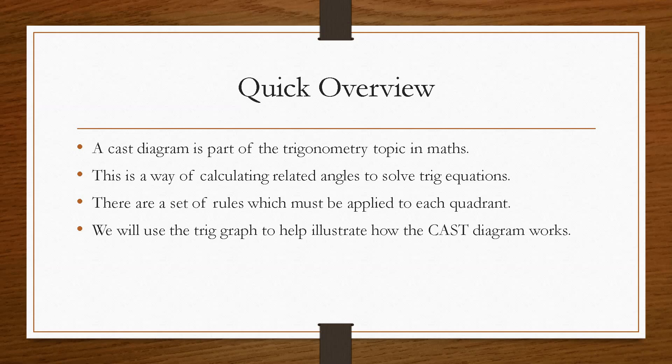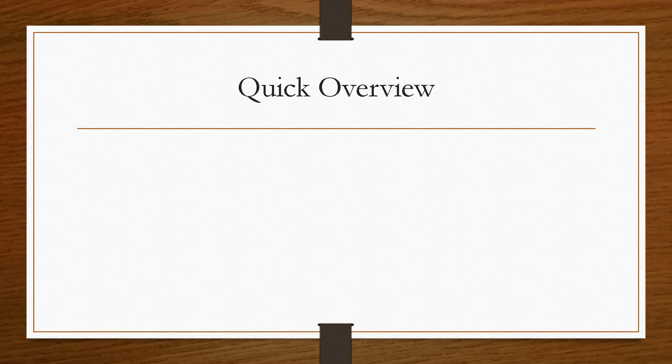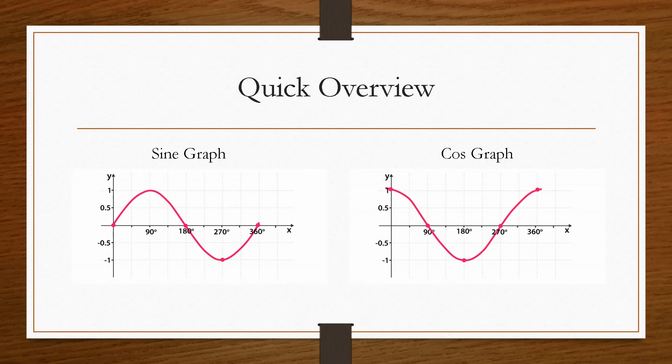And we will use the trig graphs, the sine and the cos graph, to illustrate how the CAST diagram works and where we come up with the positive and negative values. So if we consider the sine graph and the cosine graph, we're going to need these a little later on. But the CAST diagram revolves around these two curves.